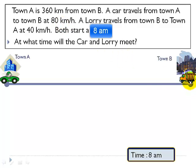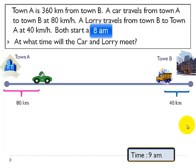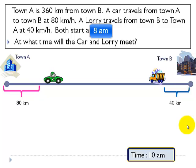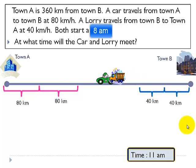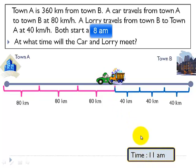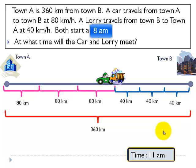After one hour — at 9 a.m. — the car would have moved 80 kilometers and the truck has covered 40 kilometers. After another hour at 10 a.m., the car would have traveled another 80 kilometers and the truck another 40 kilometers. One hour later at 11 a.m., the car covers another 80 kilometers and the lorry another 40 kilometers. They both meet at 11 a.m., so the time taken is 3 hours. The total distance is 360 kilometers, and the time taken for the car and lorry to meet is 3 hours.